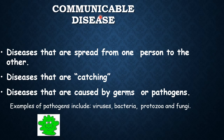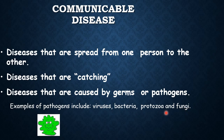So the first type of disease is the communicable disease. Communicable diseases are spread from one person to the other. Such diseases are said to be catching, meaning infectious or contagious. These diseases are caused by germs, which can also be called pathogens. Examples of pathogens include viruses, bacteria, protozoa, and fungi. These are also called microorganisms because they are so minute that they cannot be seen through our naked eye.